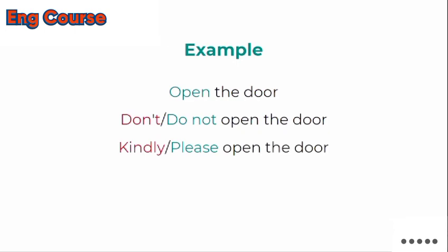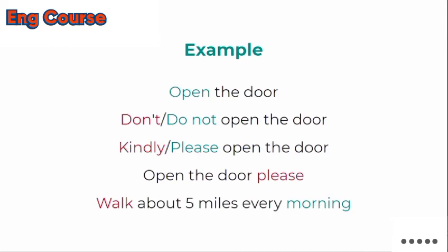Another example: 'Please open the door' or 'Kindly open the door' — if you start with 'please' or 'kindly', it becomes a request. You can also place 'please' at the end: 'Open the door, please.' If 'please' is at the start, it is a request; if at the end, it is a polite order. For example: 'Please bring me a glass of water' is a request, while 'Bring me a glass of water, please' is a polite order. 'Please walk about 5 miles every morning' is advice — an imperative sentence starting with V1.